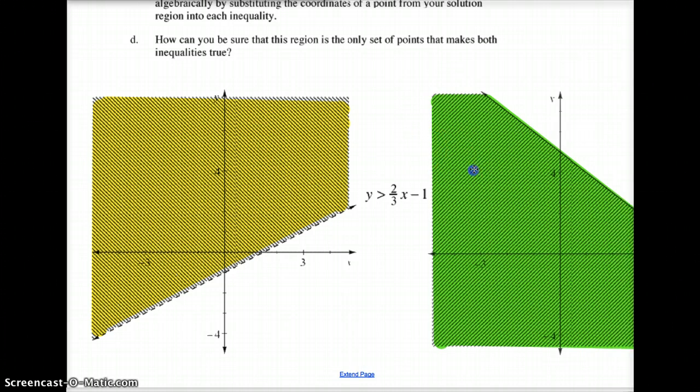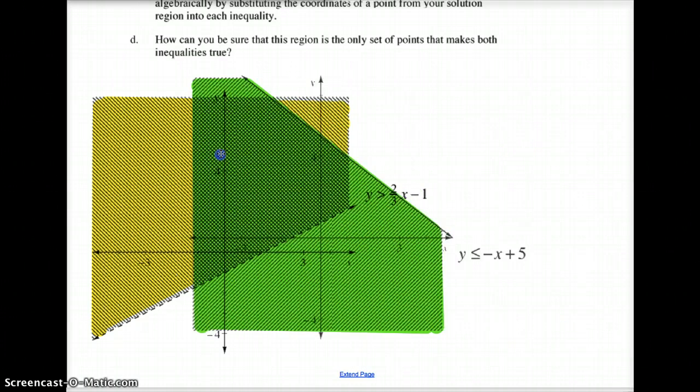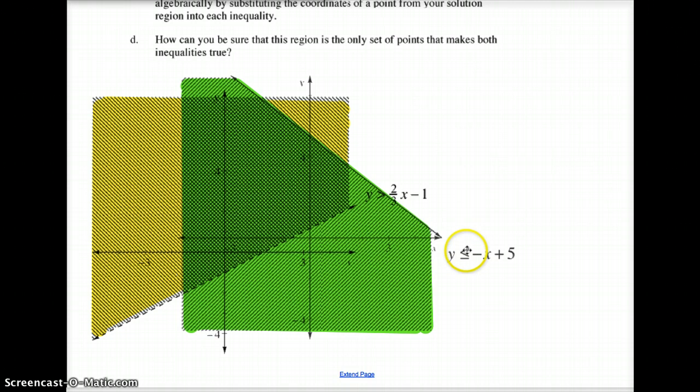Moving over to the other one, here is y is less than or equal to negative x plus 5. So it crosses at 5. It's a negative 1x, so it goes down 1 over 1. It's got a solid line because y has an equal sign, and it's shaded below the line because y is less than.